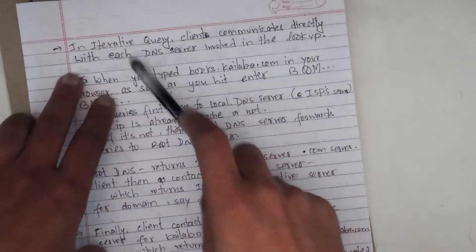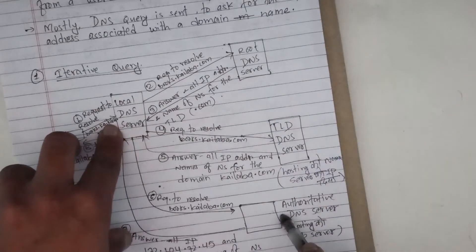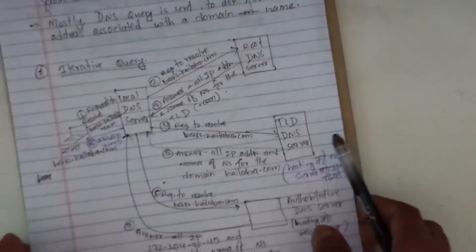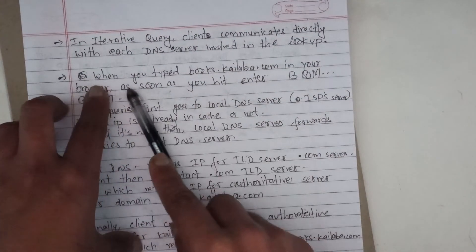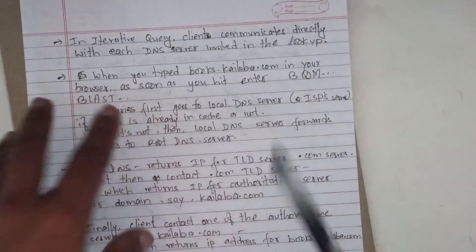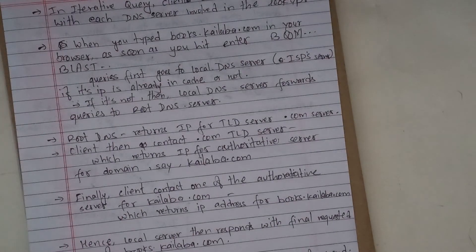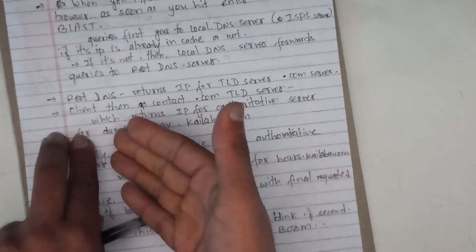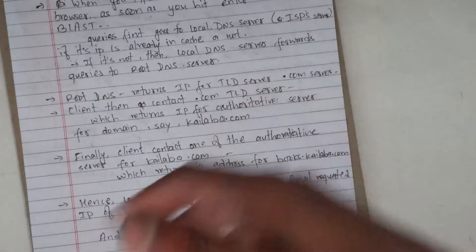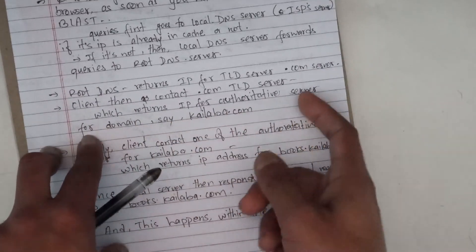In iterative query, the client communicates directly with each DNS server involved in the lookup. The sequence is: iterative local DNS server → root DNS → TLD → authoritative. When you type books.kainlava.com in your browser and hit enter, the query first goes to the local DNS server. If the IP is not in cache, the local DNS server forwards the query to the root DNS server, which returns the IP for the TLD .com server. The client then contacts the .com TLD server, which returns the IP for the authoritative server for the domain kainlava.com.